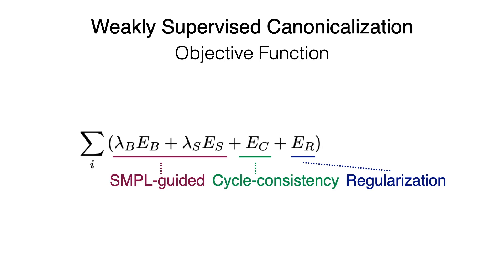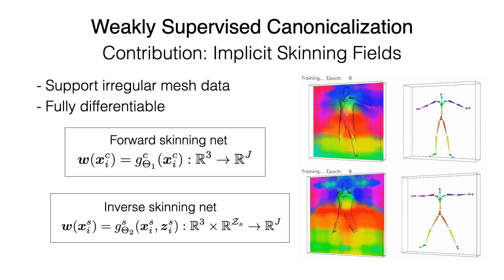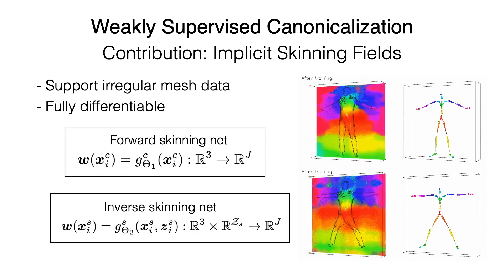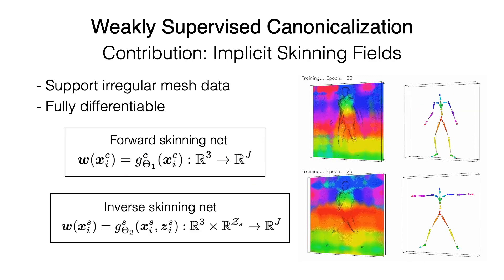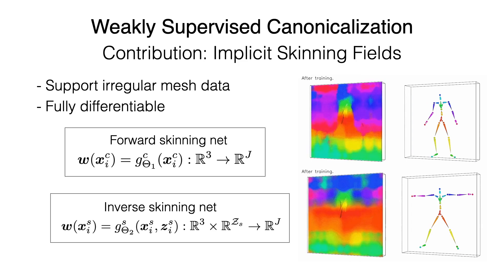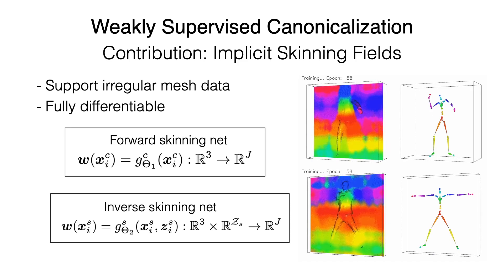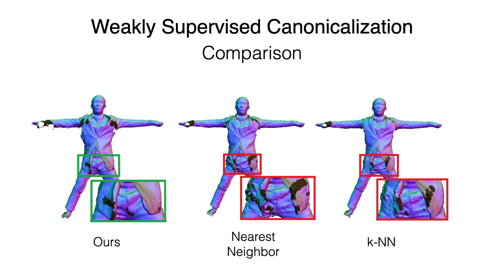Please refer to the paper for more details. To enable the learning of skinning weights, another key is the data representation that supports the irregular structures of input scans. To this end, we propose implicit skinning fields that extend per-vertex skinning weights to a continuous 3D space. Our weakly supervised approach produces more favorable canonicalization results.